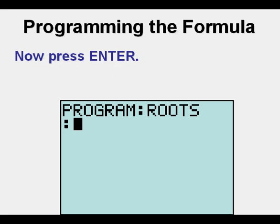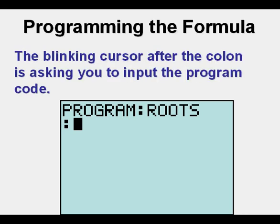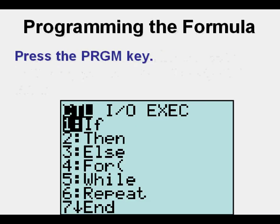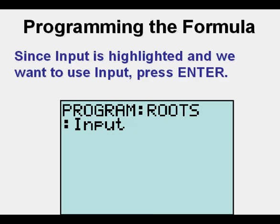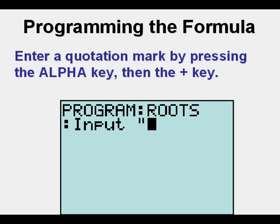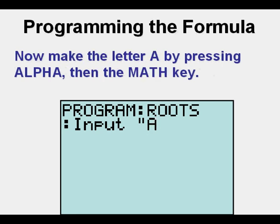The blinking cursor after the colon is inviting you to start inputting the program code. Press the program key, then arrow once to the right to get to the input-output commands. Since Input is highlighted and we want to use Input, press Enter. Enter a quotation mark by pressing the Alpha key, then the Plus key on the right side of the calculator. Make the letter A by pressing the Alpha key, then the Math key.